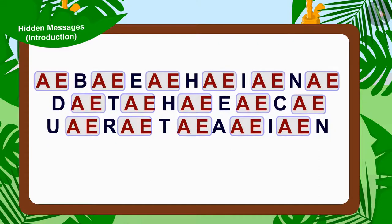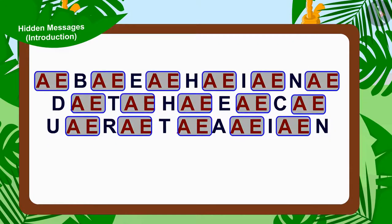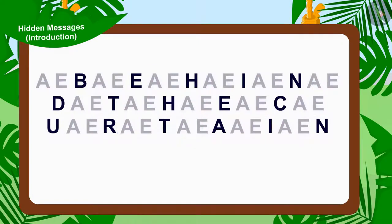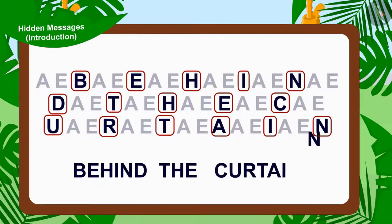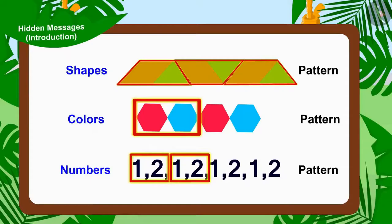If we only write the alphabets coming after A and E, excluding the alphabets A and E, we will find this written. Children, now did you understand the clue written in Appu's letter? Absolutely right — the clue is 'Behind the curtain.'